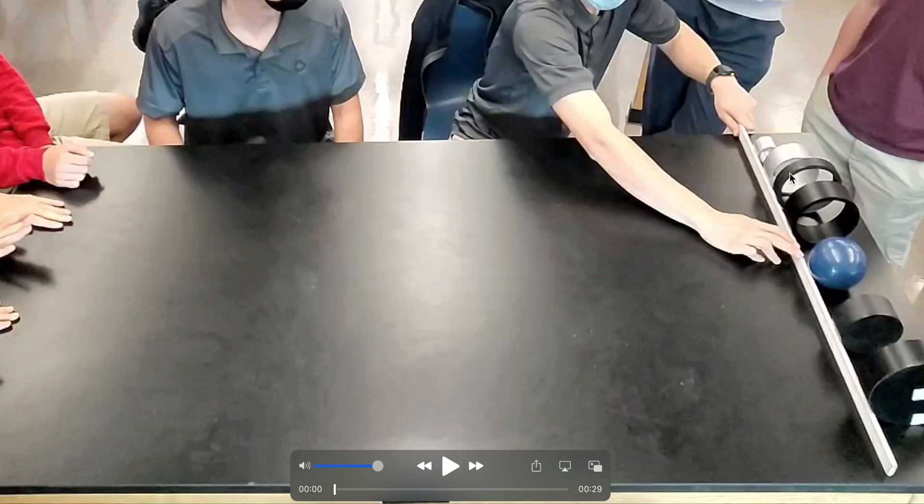A little experiment some students of mine did where we are rolling some objects down this table. Here are four rings of different radiuses and masses. Here is a blue sphere, solid ball, and here are two discs. And so let's let them rip. You ready?